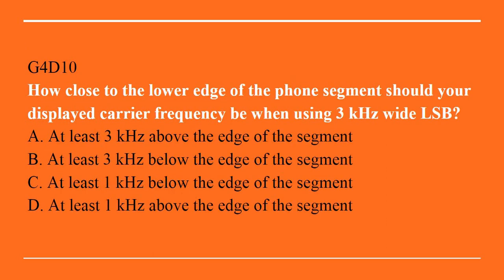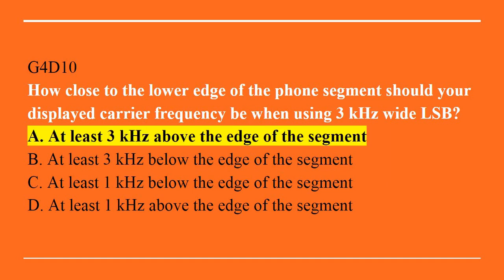G4D10: How close to the lower edge of the phone segment should your displayed carrier frequency be when using 3 kHz wide lower sideband? A. At least 3 kHz above the edge of the segment. B. At least 3 kHz below the edge of the segment. C. At least 1 kHz below the edge of the segment. Or D. At least 1 kHz above the edge of the segment. The correct answer is A. At least 3 kHz above the edge of the segment.